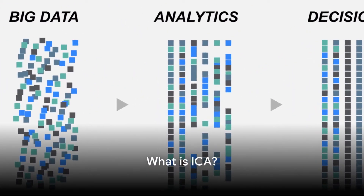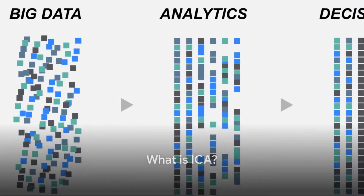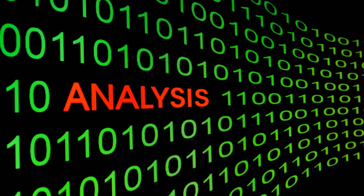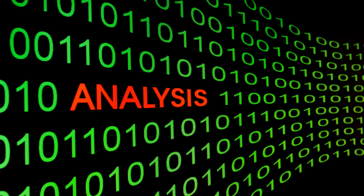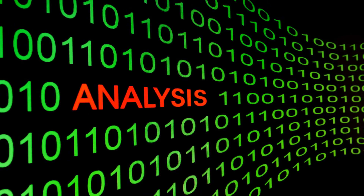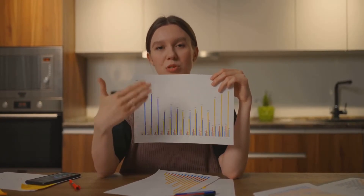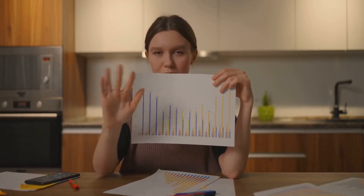What exactly is ICA? In the simplest terms, it's a computational method used to separate a multivariate signal into independent non-Gaussian signals. By multivariate, we mean that it involves more than one statistical outcome at a time. And by non-Gaussian, we refer to the distribution of the data not following the bell curve, which is common in real-world data.